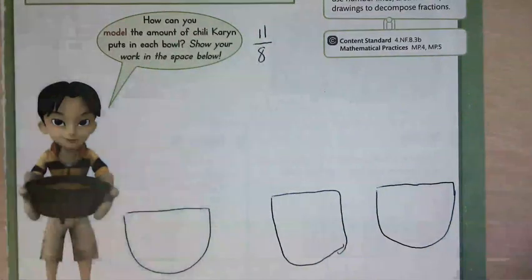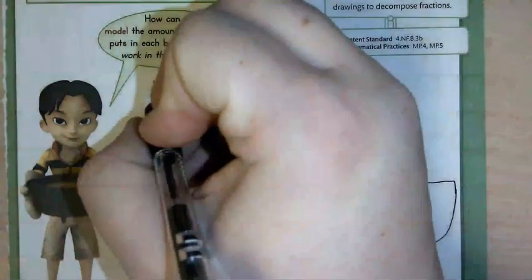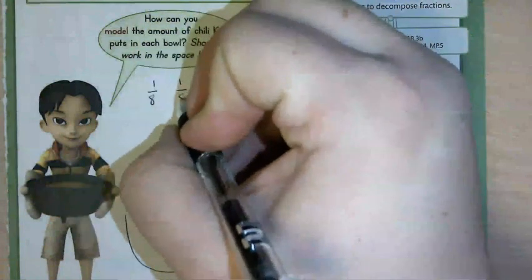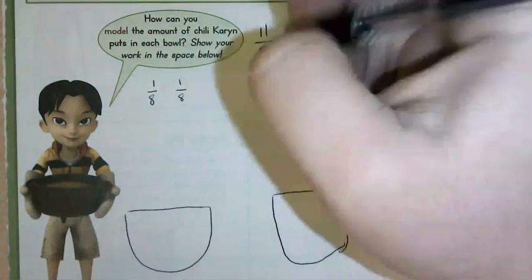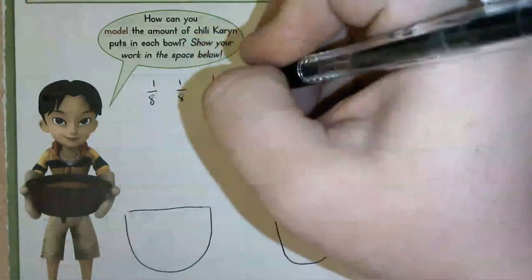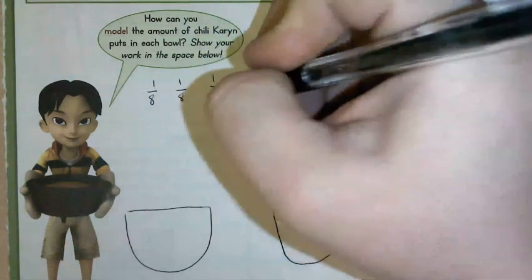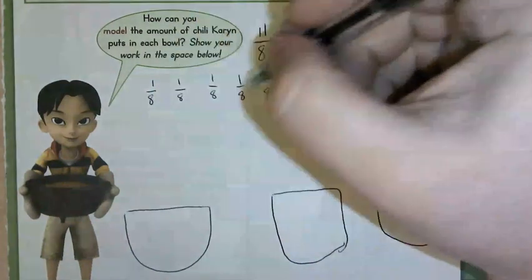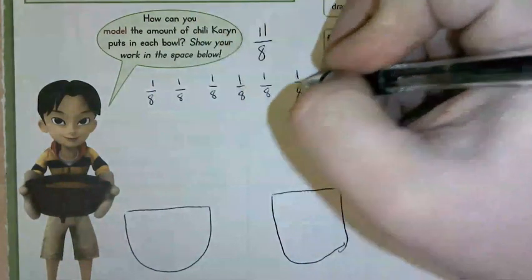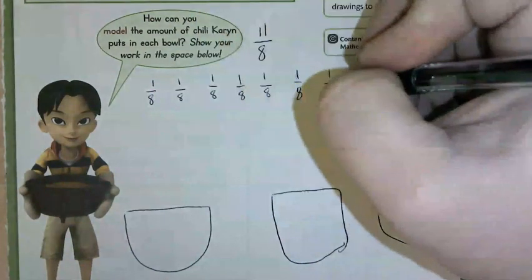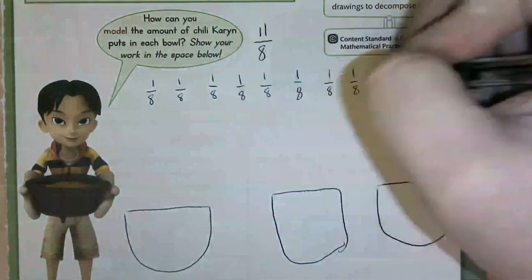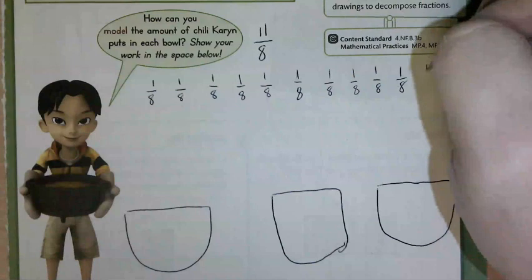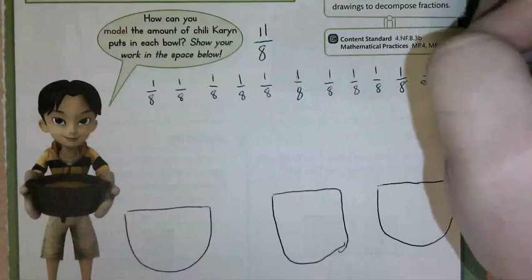Remember from our lesson yesterday: 11/8 is just eleven 1/8s. So I'm going to go ahead and write those out right now — you can do this with me: 1, 2, 3, 4, 5, 6, 7, 8, 9, 10, and 11.